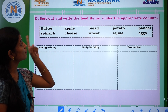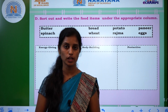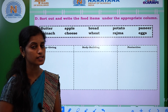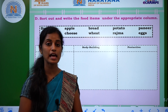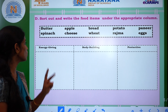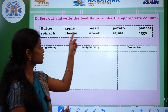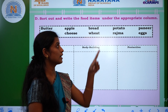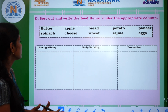Sort and write the food items under the appropriate column. Here they give you a help box. By using this help box, you can find out which food items are energy-giving food, which food items are body-building food, and which food items are protective food.